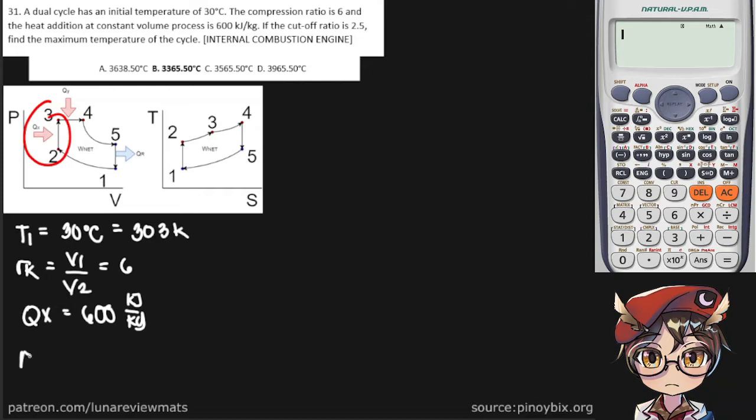And the cutoff ratio given by V3 over V4 is equal to two and a half. And we're asked to find the maximum temperature of the cycle, which in the case of dual combustion is T4, in degrees Celsius.